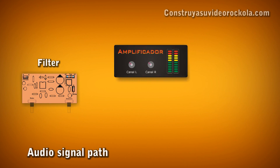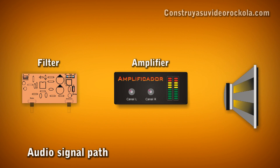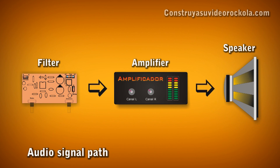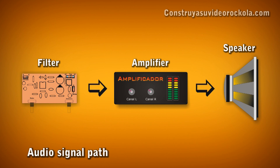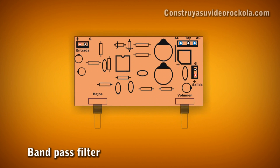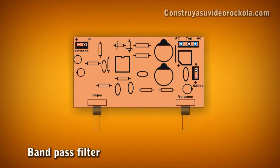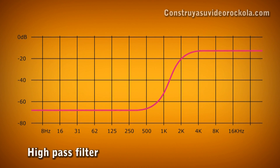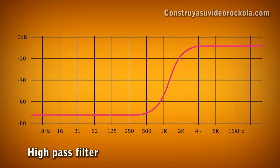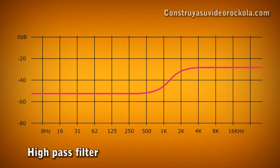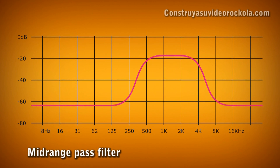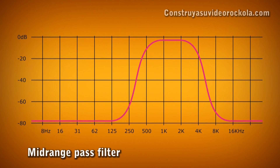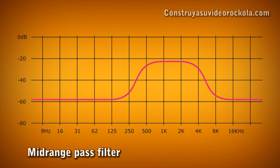For this reason, it is necessary to divide the frequency before being amplified, using an amplifier for each group of frequencies. It is at this moment that a band pass filter is required. A band pass filter is an electronic circuit that allows the passage of a certain frequency range of a signal and weakens the other frequencies.